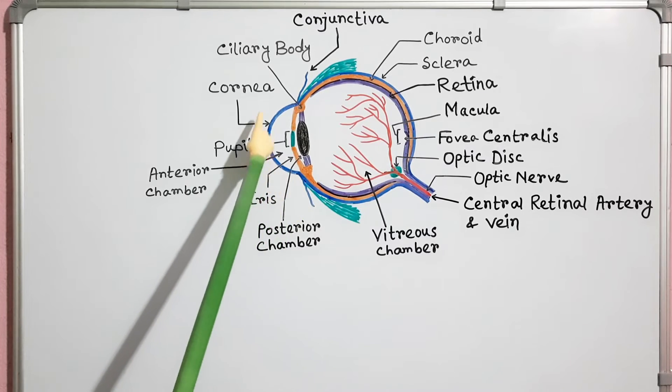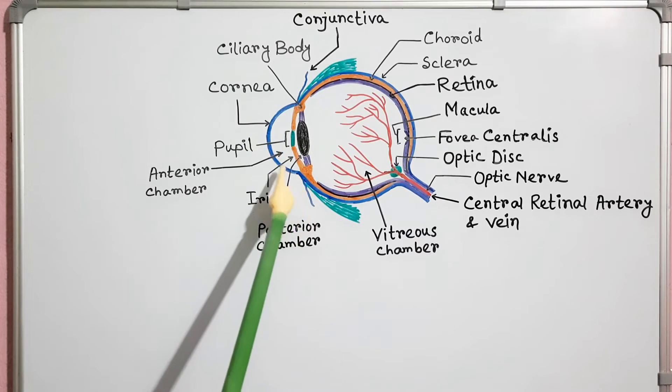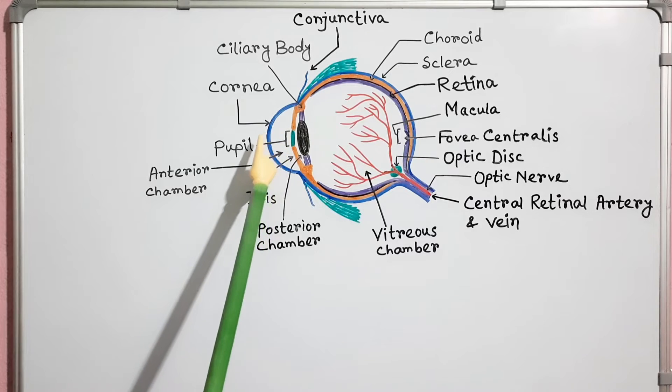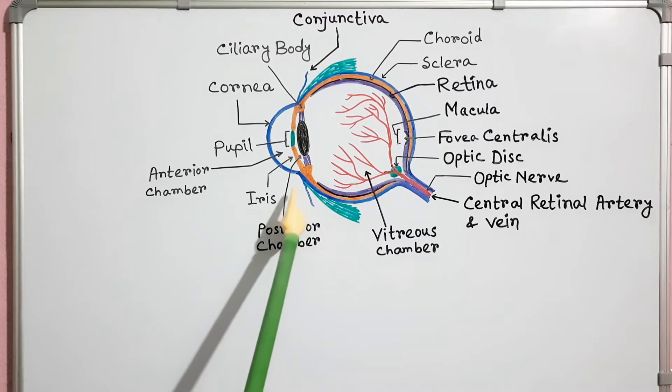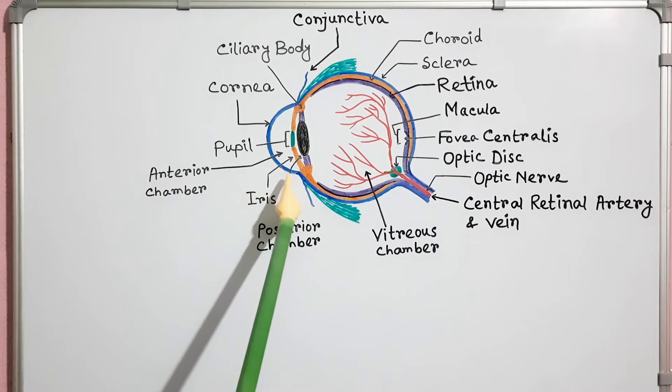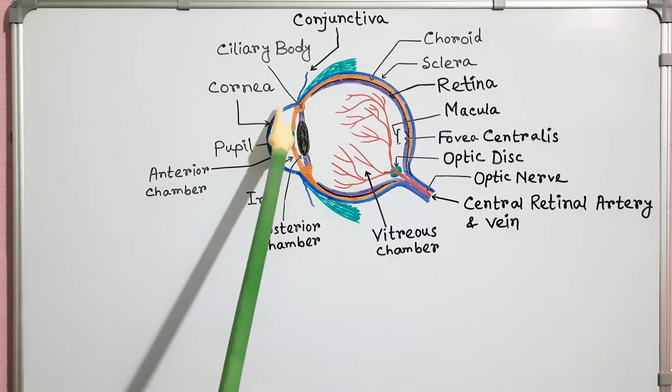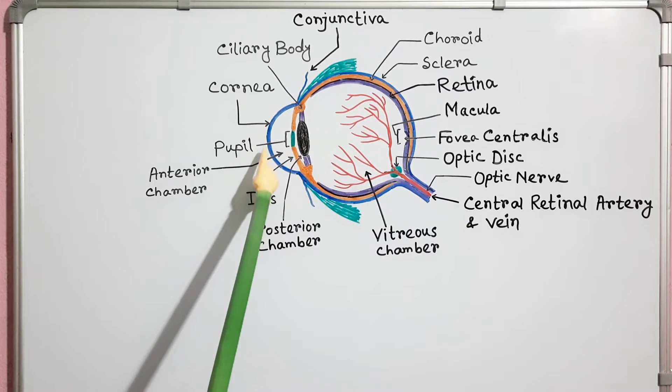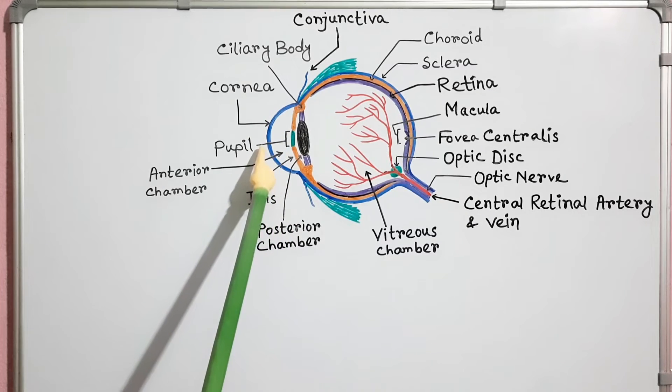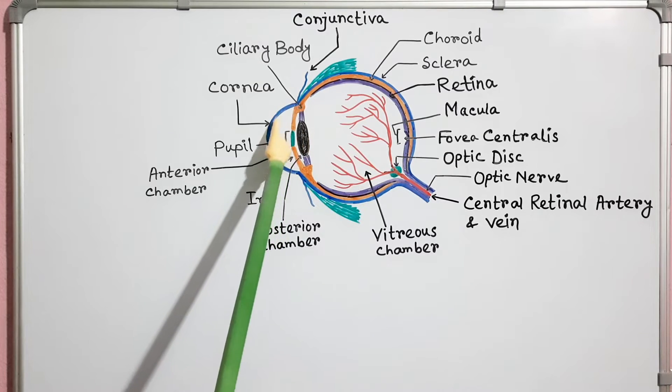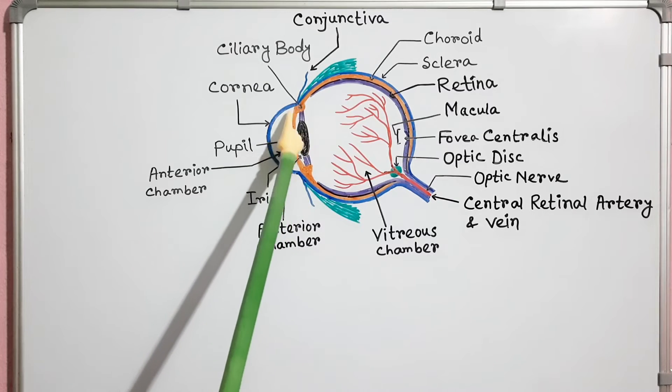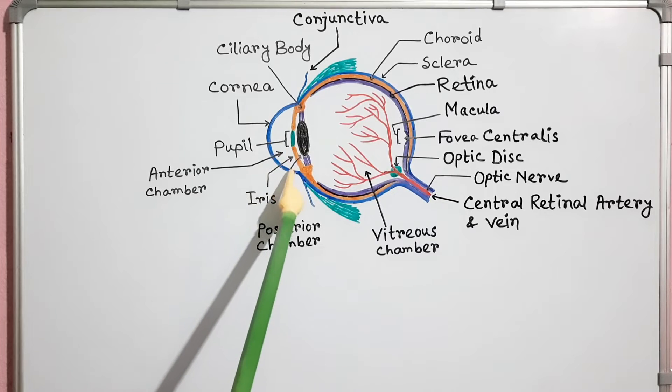The cornea consists of a connective tissue matrix containing collagen, elastic fibers, and proteoglycans. The outer surface is covered with a layer of stratified squamous epithelium and the inner surface is covered with a layer of simple squamous epithelium.